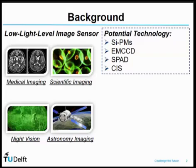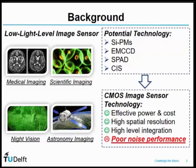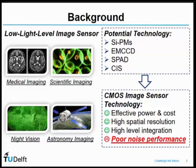In order to build such kinds of image sensors, there are several potential technologies available, for example, the silicon photomultiplier, the EMCCD, the SPAD, and CMOS image sensor technology. Compared with other technologies, CMOS image sensor technology shows advantages of more effective power and cost, and it can provide high spatial resolution and high-level integration. But it suffers from poor noise performance. So the main focus of our work is to lower the noise level of the CMOS image sensor as much as possible and improve the noise performance.